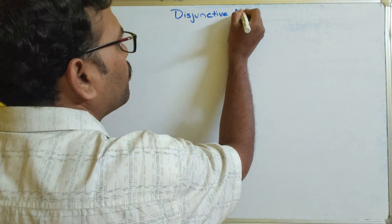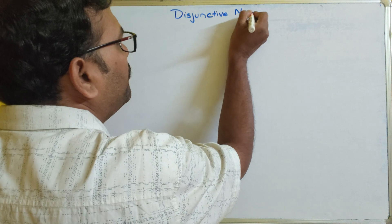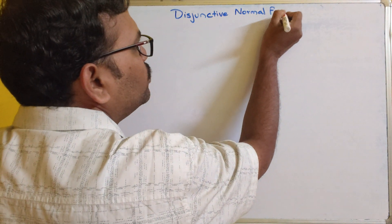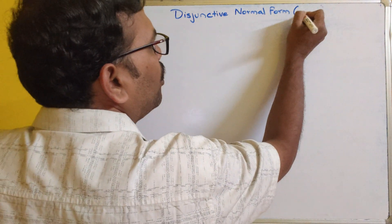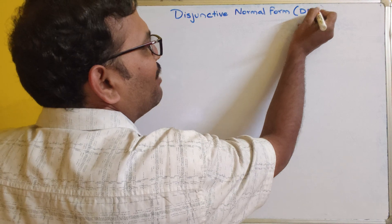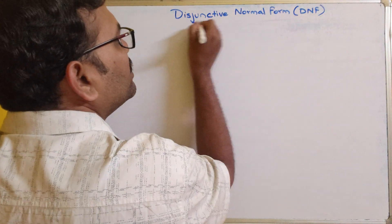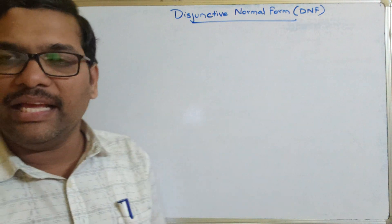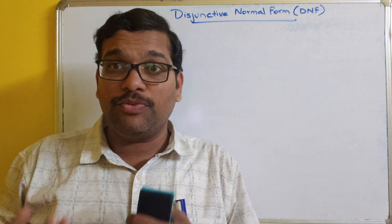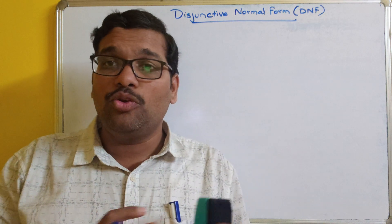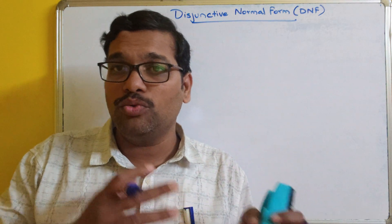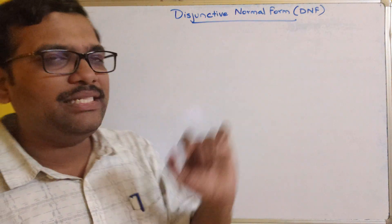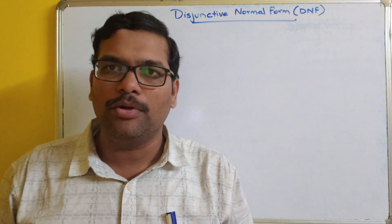Disjunctive Normal Form, which can also be called DNF. In the previous session we have seen CNF, and now it is DNF. Whatever steps we have seen to convert any formula to CNF are the same for Disjunctive Normal Form also.